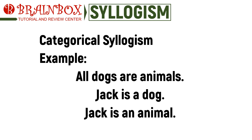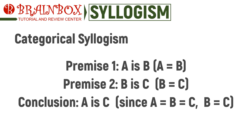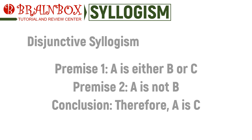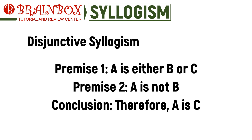There are three forms of syllogisms, and our example with Jack the animal belongs to the first kind, called the categorical syllogism. The general form of a categorical syllogism is: A is B, B is C, therefore A is C. The second type of syllogism is a disjunctive syllogism, and it has the general form: A is either B or C, A is not B, therefore A is C.